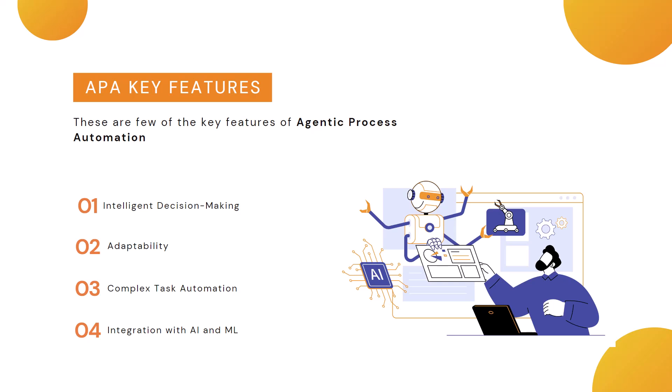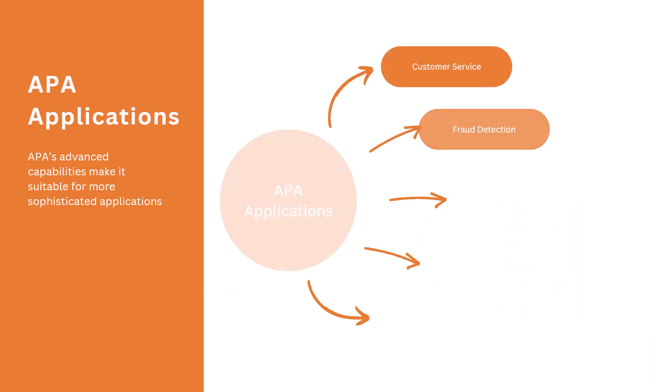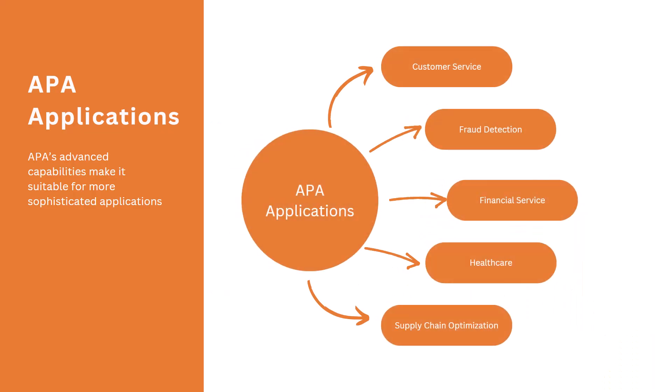However, it does not mean that APA is going to stay and RPA will go away. No — they will work hand in hand, because APA comes with an added flavor of decision making and adaptability, but rule-based RPA bots would still be needed.